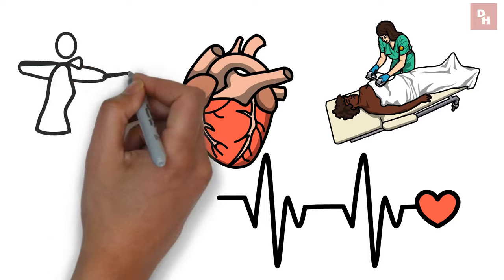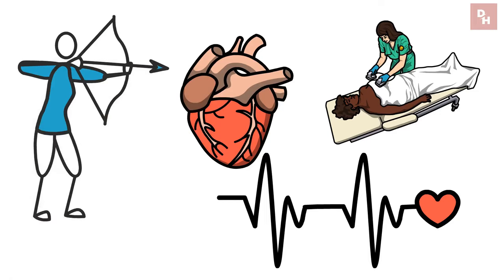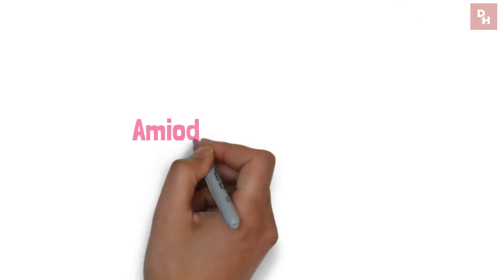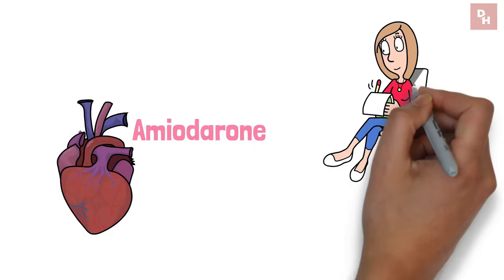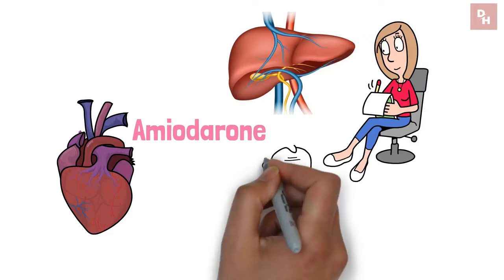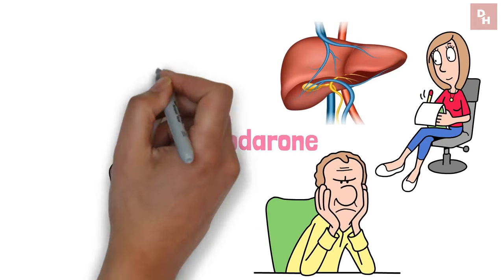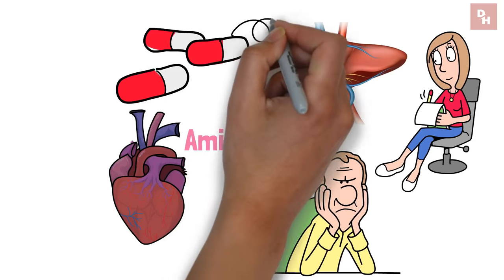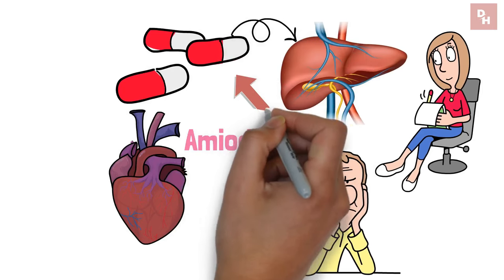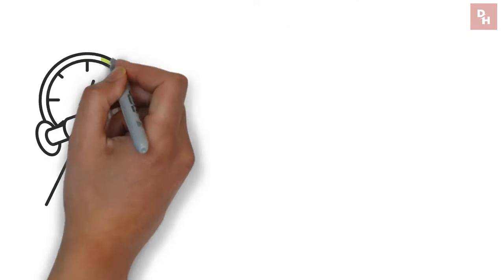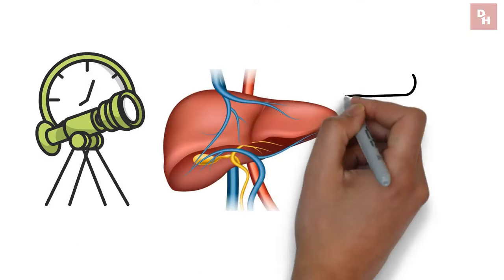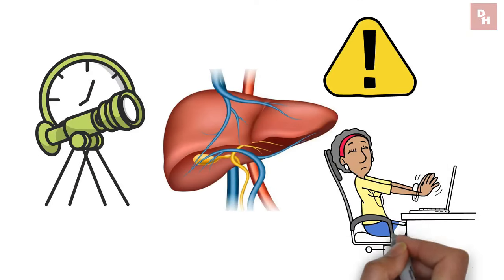But, as with any maestro wielding a powerful baton, there's a catch. While amiodarone takes charge in the heart department, it's having a bit of a side conversation with your liver, and not always a friendly one. The thing is, this medication needs to be processed by the liver, and sometimes that process can put a strain on our hepatic friend. Over time, this strain can lead to liver risk, something we'd all like to avoid.